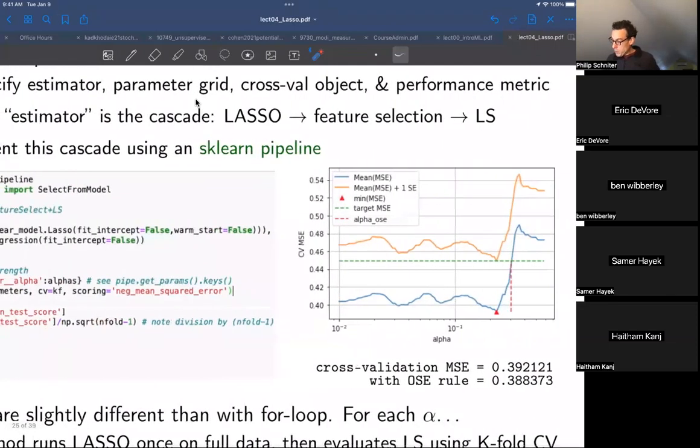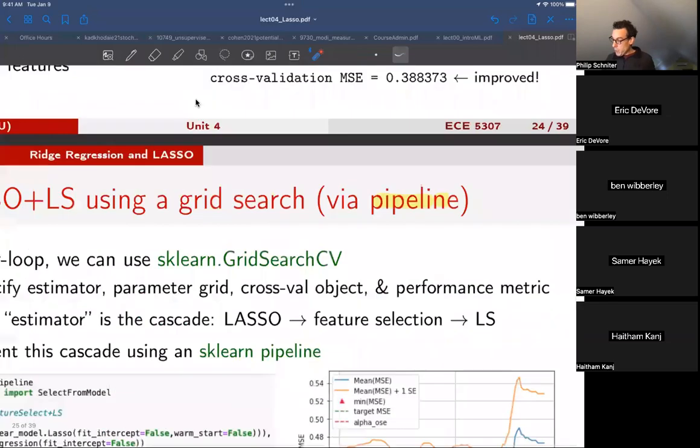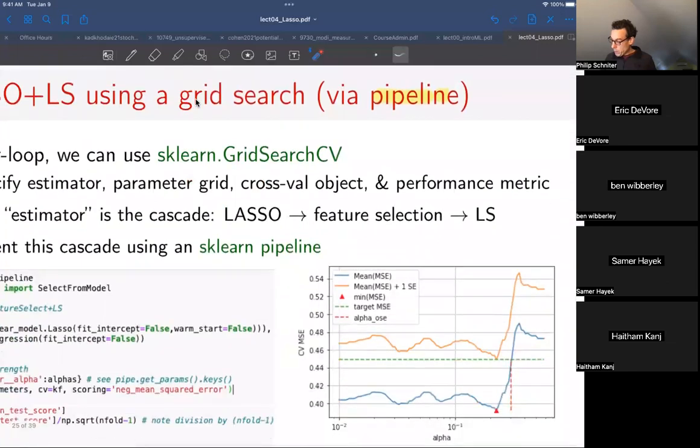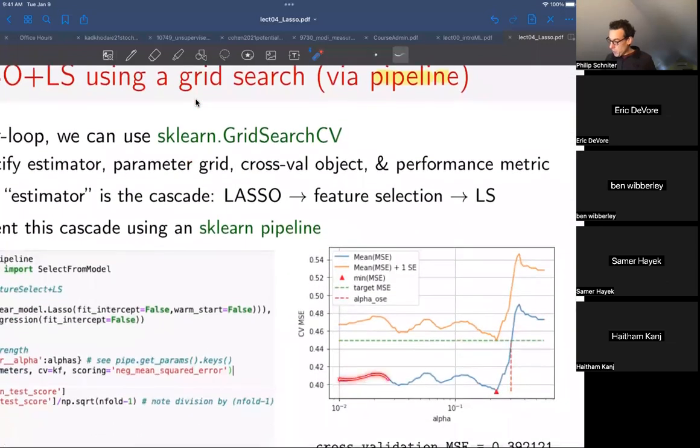So now what's interesting is this is versus alpha. The blue one is the cross-validation mean squared error. Unlike here where it was basically piecewise linear, now it has some sort of a shape to it. So the simplest thing to do at this point would just be to say, let's just find the alpha that gave us the lowest mean squared error, which would be this one.